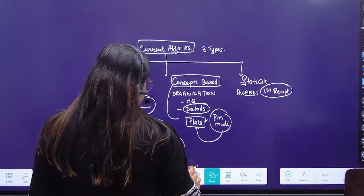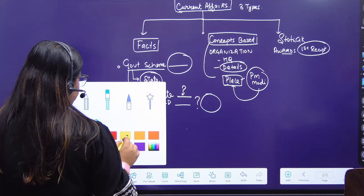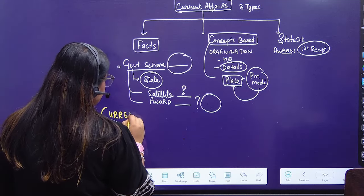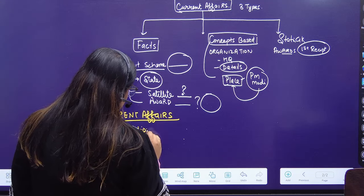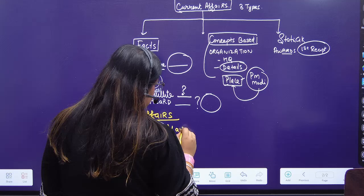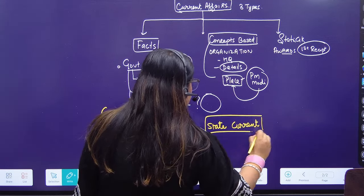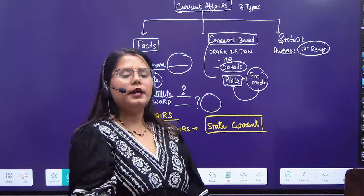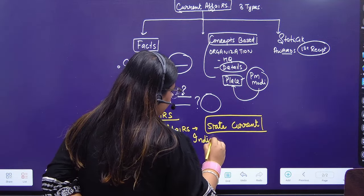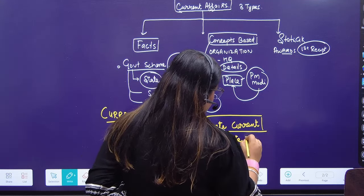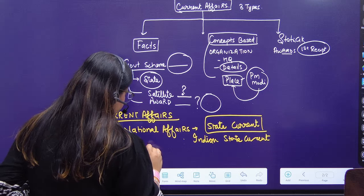If we look at current affairs, these types, then we can see that current affairs chapters we can divide. One is national affairs. National affairs means, suppose state current affairs. Assam has launched a scheme, or Orissa has launched a scheme, or Punjab has something - these are national affairs. These are only Indian state current affairs.